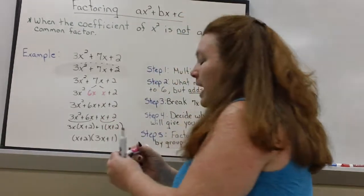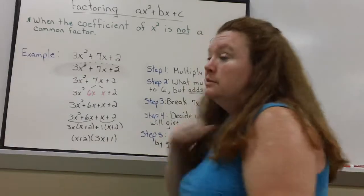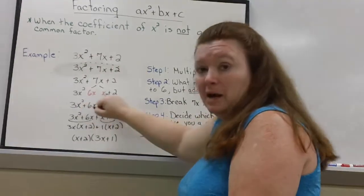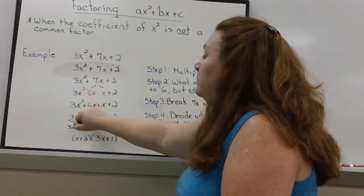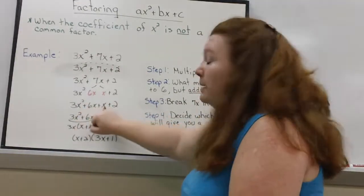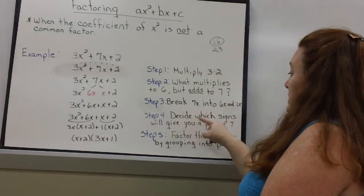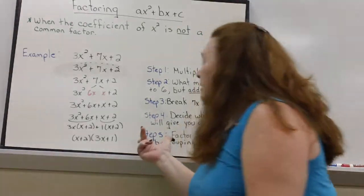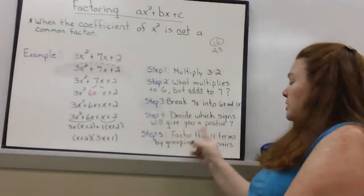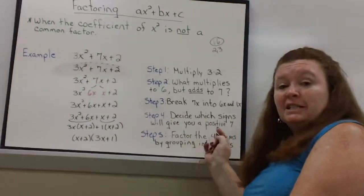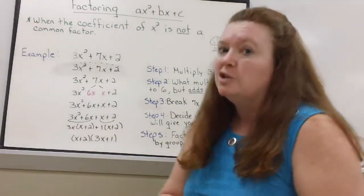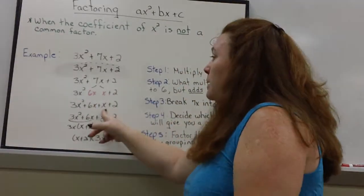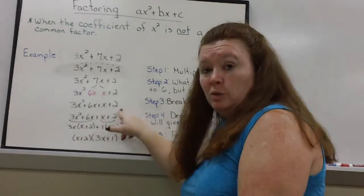Now I need to figure out the signs. Just like before when we would do this. It is a positive 7. So how do I get a positive 7 out of this? That would be a positive 6 and a positive 1. Step 4 was decide which signs will give you a positive 7. Now step 5. Factor the 4 terms by grouping into pairs. So that's what I'm going to do now. I'm going to break this into 2 terms and 2 terms.